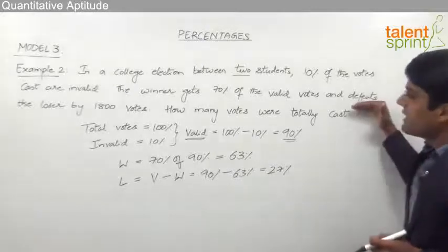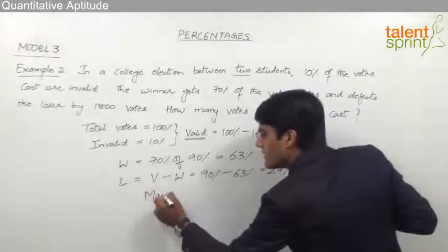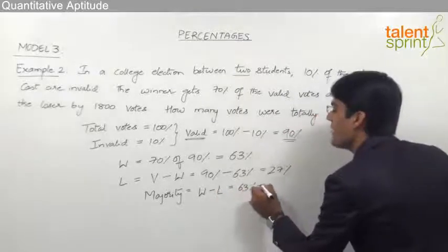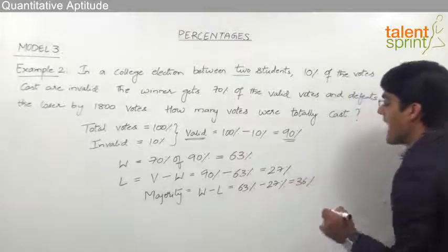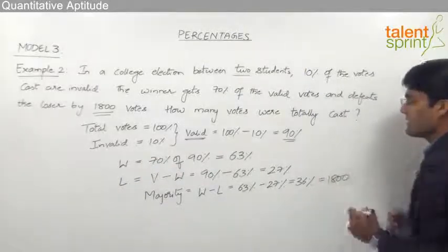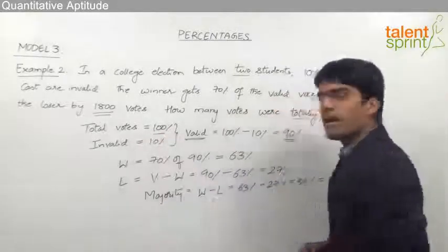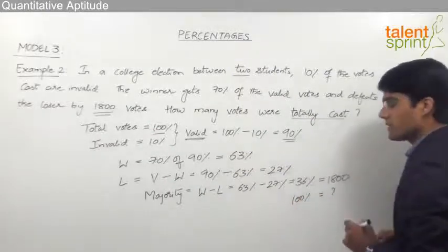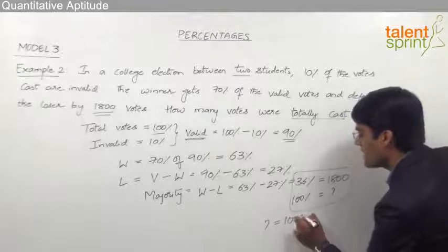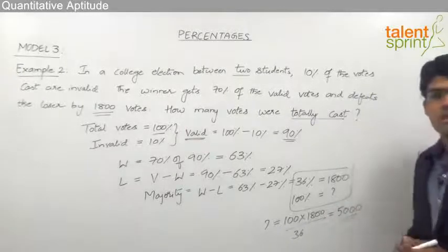The winner defeats the loser by 1800 votes. Majority is the winner's percentage minus the loser's percentage: 63% minus 27% equals 36%. This 36% is equivalent to 1800 votes. We need to find the total votes cast, which is 100%. So 100% equals 100 × 1800 ÷ 36, which comes out to be 5000 votes. The total number of votes cast is 5000.